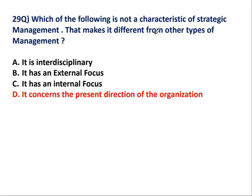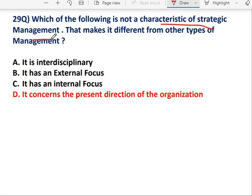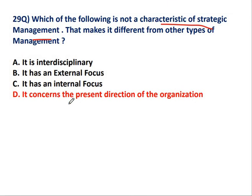Question No. 29: Which of the following is not a characteristic of strategic management that makes it different from other types of management? Strategic management has an interdisciplinary nature, external and internal focus. But 'it concerns the present direction of the organization' is not correct — strategic management is future-oriented, not present-oriented. So this is the incorrect characteristic.